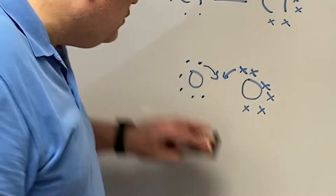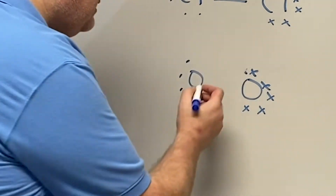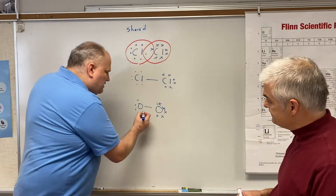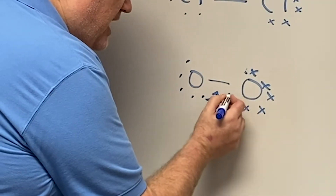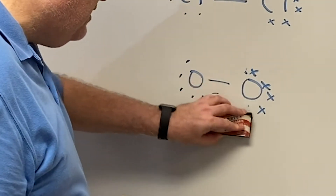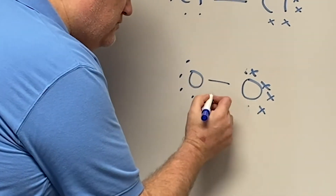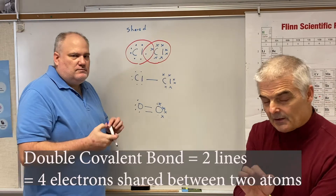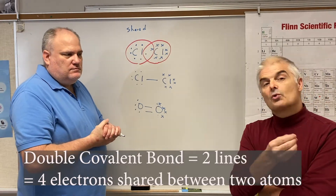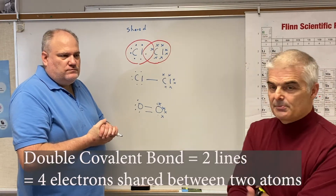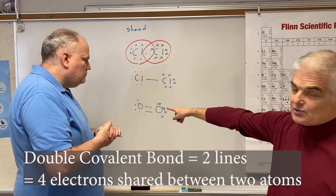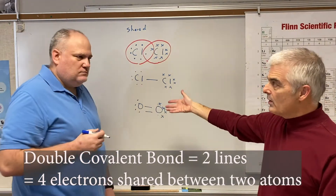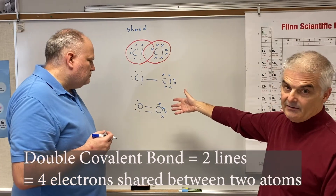If this oxygen shares one electron and this oxygen shares one, that creates two electrons being shared between them — that's a bond. Then these two can share another pair, creating a second bond. Each bond is two electrons being shared. What we have now is a double bond. A double bond is four electrons, or two pairs of electrons, shared between two atoms — represented by two lines.